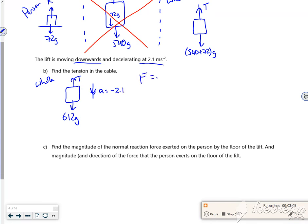So if I do F equals ma, the force in the direction of travel is 612G. The force opposing it is T. Then it's mass of 612 times minus 2.1. With rearranging, I've got 612G plus 612 times 2.1, because the minus turns into a plus. That gives me a tension of roughly 7000 newtons to 1 sig fig.